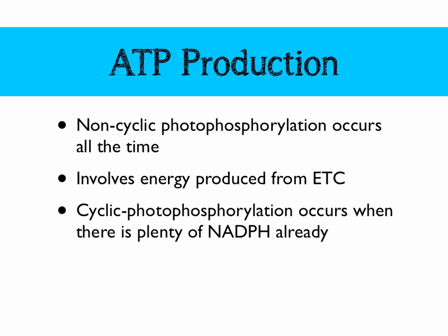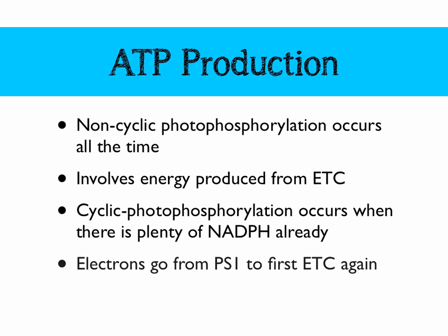We also have cyclic photophosphorylation, which occurs when there is plenty of NADPH already in the chloroplast. In this type of photophosphorylation, electrons are going to move from photosystem 1 — the second photosystem — and they're going to go back around the first electron transport chain again, producing more ATP.